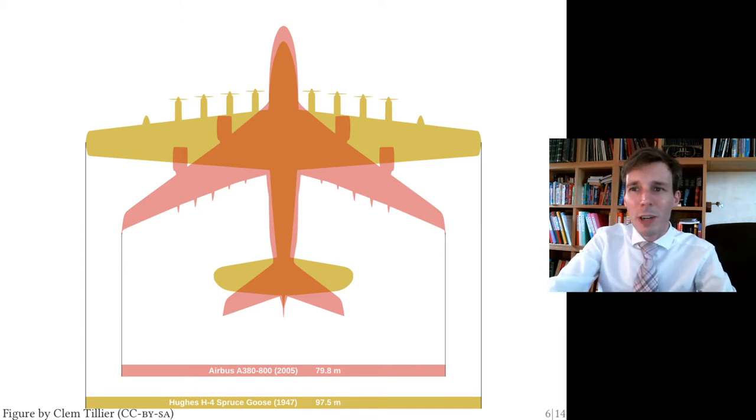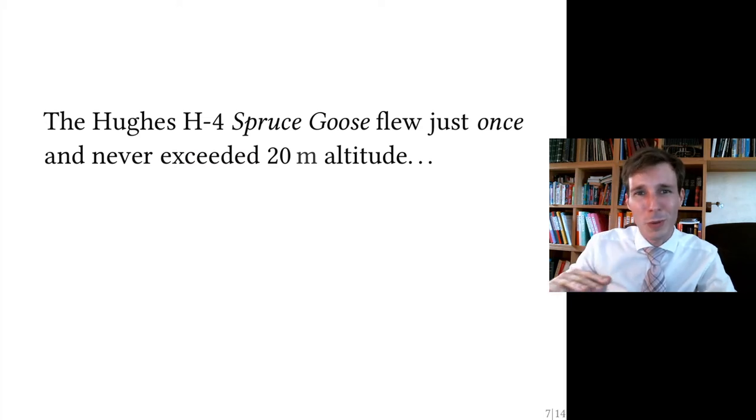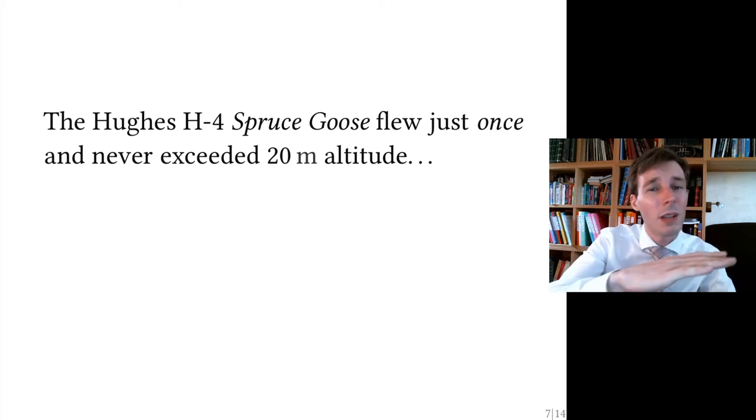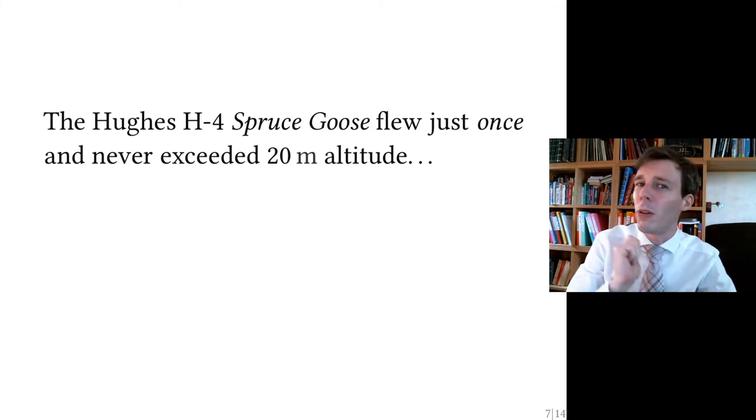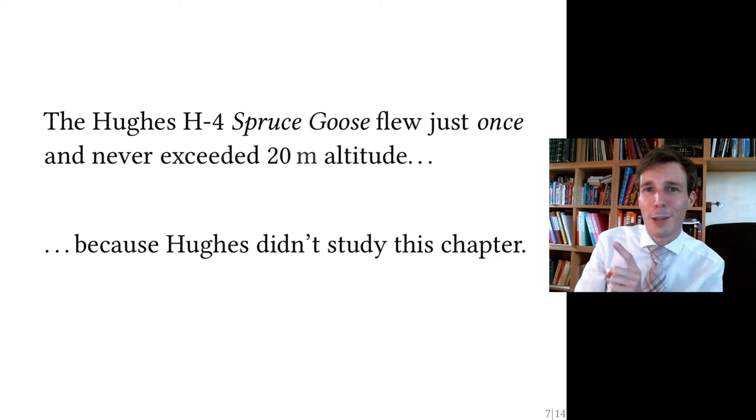So what happened to this airplane? Why was it not so much more successful? Why does nobody talk about this airplane? Well, this is the story. The Spruce Goose, the H-4 Spruce Goose, it flew only one time. And then when it flew, it could not fly very high up. It remained at 20 meters altitude. It was not able to climb. Why? Because Howard Hughes did not study this chapter.